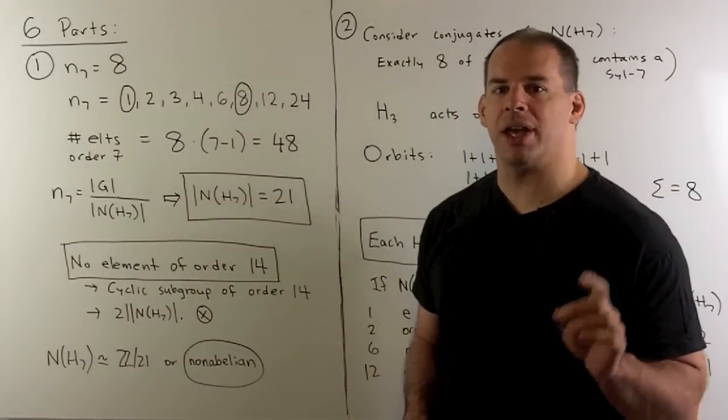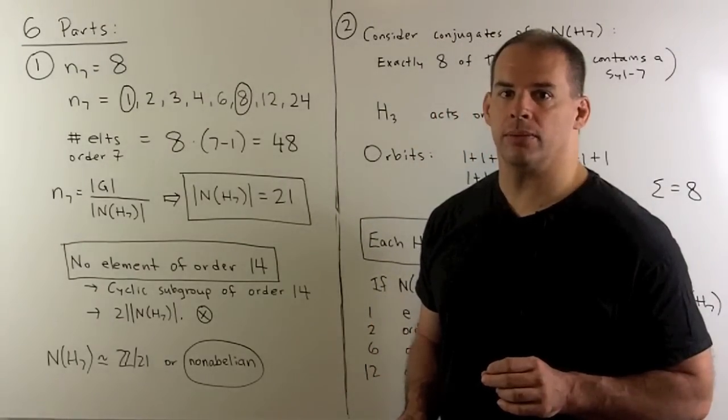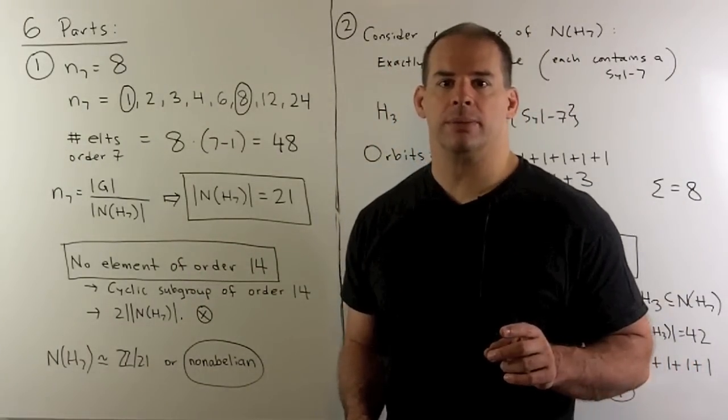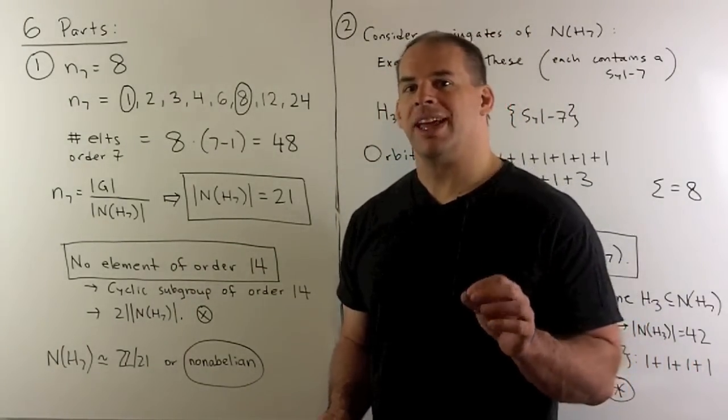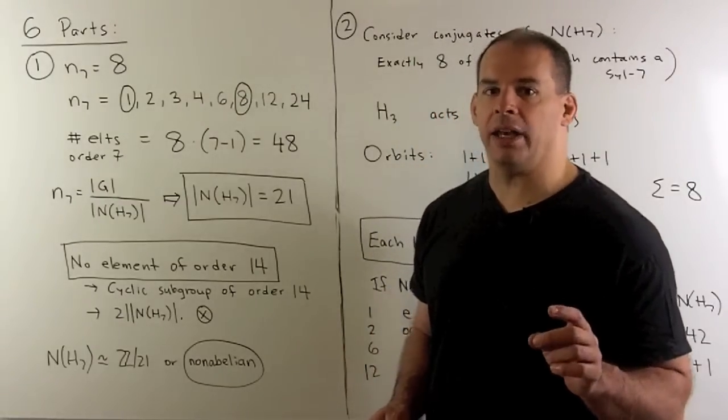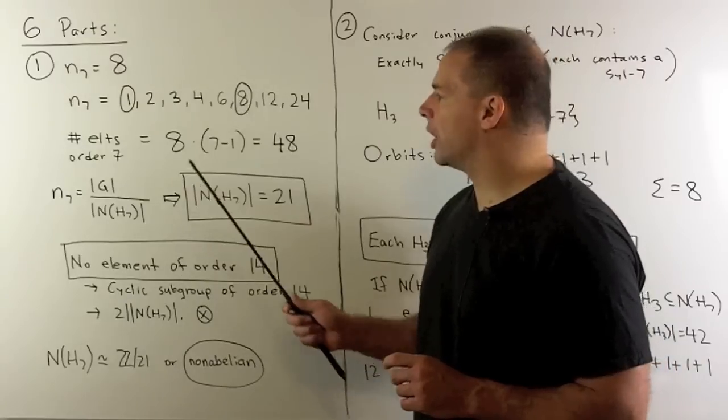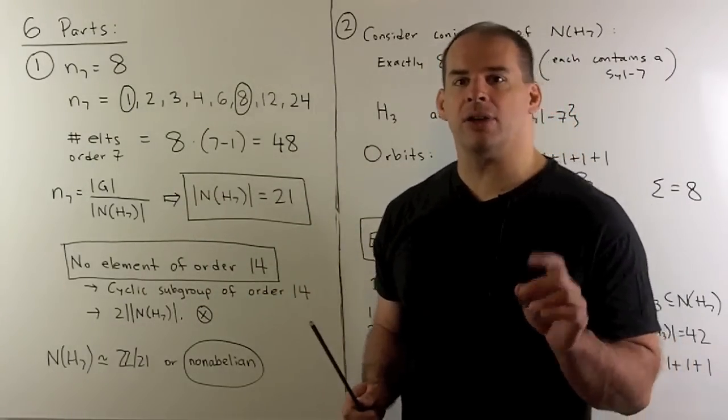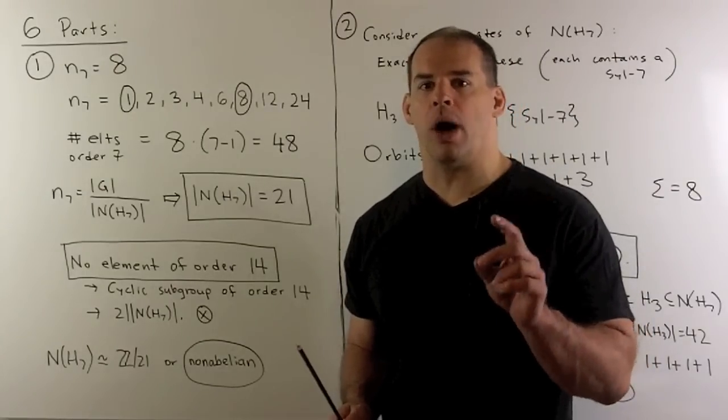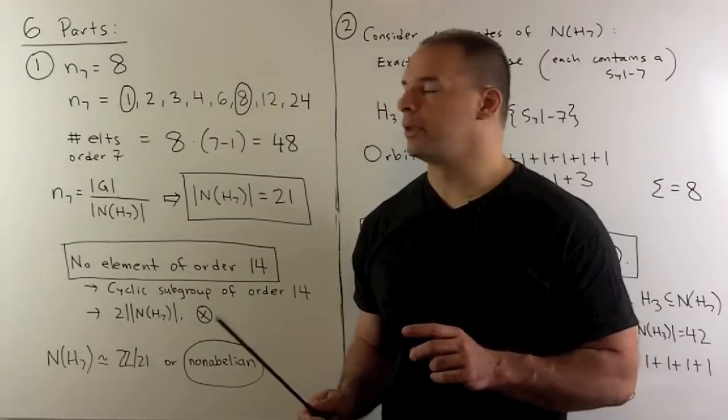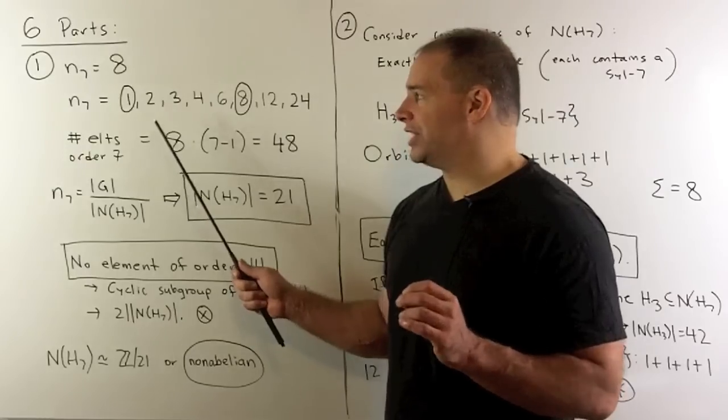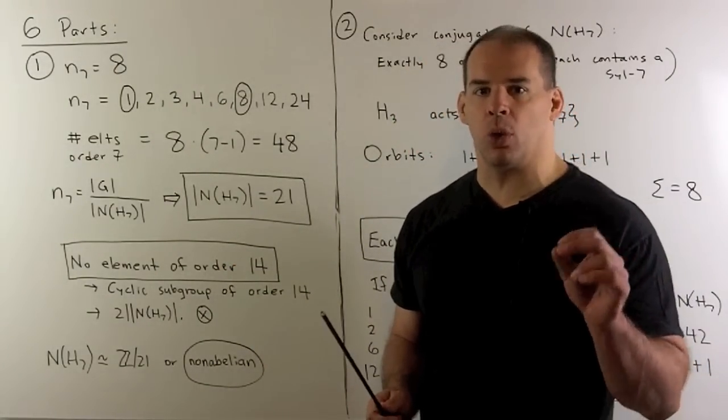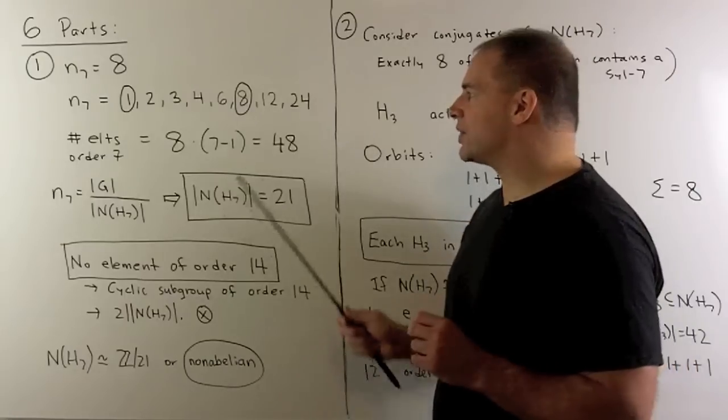For the first part, I consider Sylow 7 subgroups and their normalizers. Now, to find n sub 7, we can use the Sylow theorems. First, n sub 7 divides 168, but is not divisible by 7. So, we narrow it down to these candidates. And then we further narrow it down to 1 or 8, because n sub 7 is congruent to 1 modulo 7. Now, because G is simple, I can't use the 1, otherwise our Sylow 7 subgroup is a normal subgroup. So, that gives us our 8.